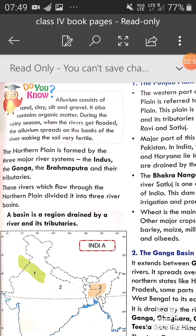Alluvium consists of sand, clay, silt and gravel. It also contains organic matter. During the rainy season when rivers get flooded, the alluvium spreads on the banks of the river — river ke banks pe deposit ho jata hai — making the soil very fertile.